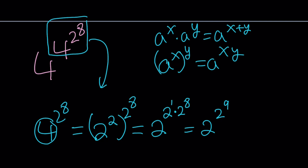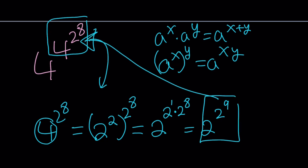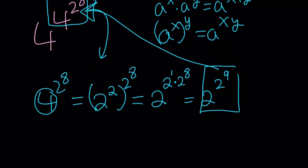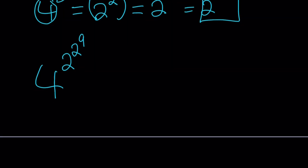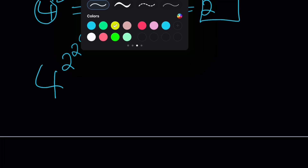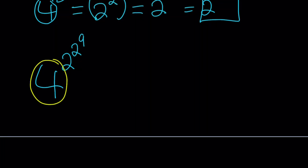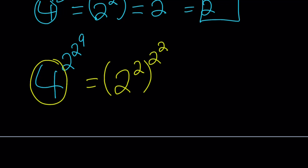That is the exponent, so we replace it. Our number turns into 4 to the power 2 to the power 2 to the power 9. Now we're going to change the last remaining base of 4, writing it as 2 squared and then raising it to the power 2 to the power 2 to the power 9.